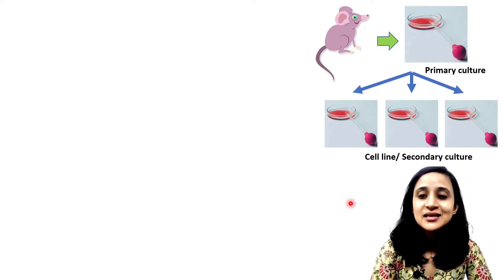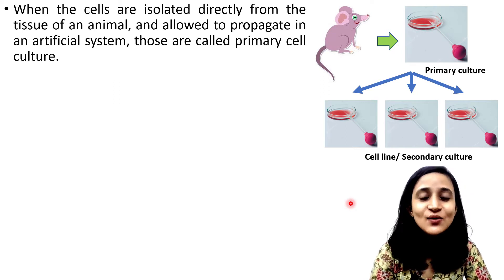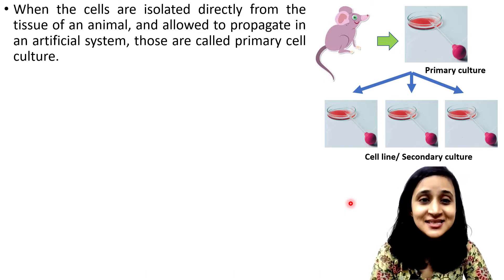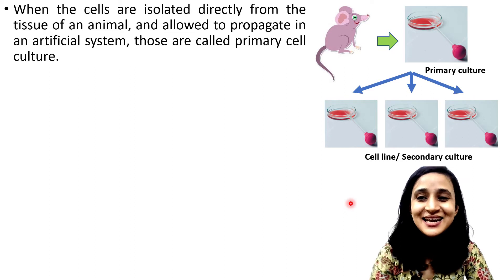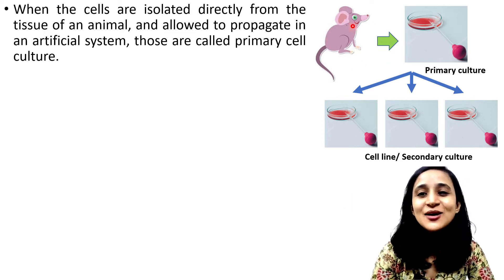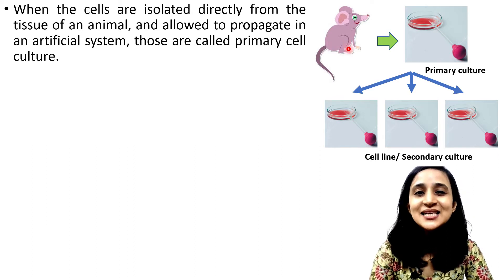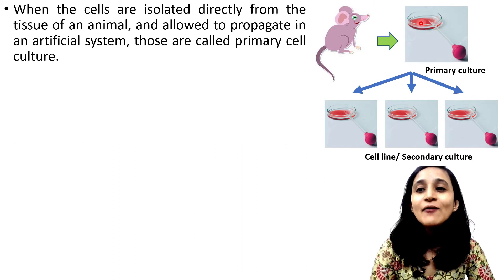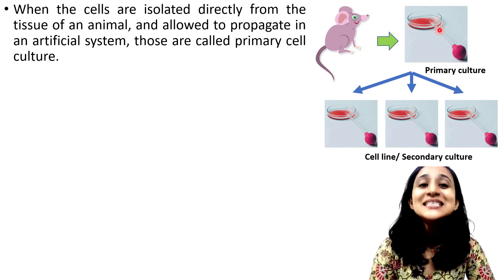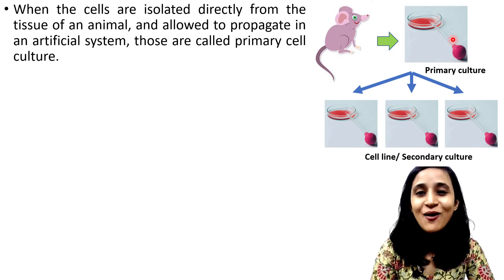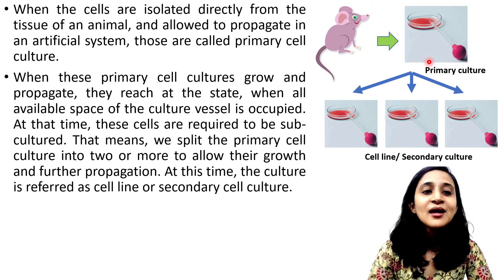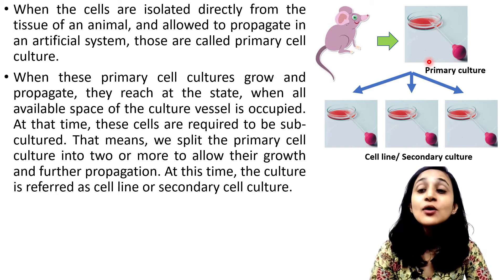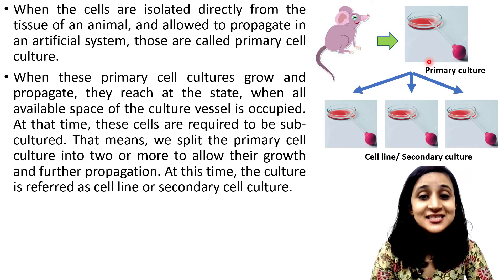When cells are isolated directly from the tissue of an animal and allowed to propagate in an artificial system, those are called primary cell culture. Here you can see a rat, and we are isolating the cells from a particular tissue of this animal, then allowing those cells to propagate in our laboratory or in an artificial system — those cells are basically called primary cell culture.